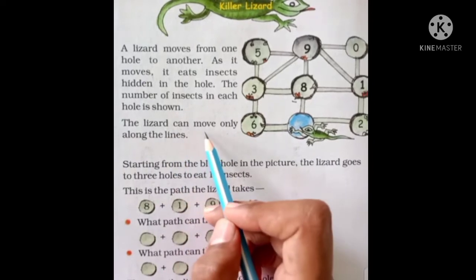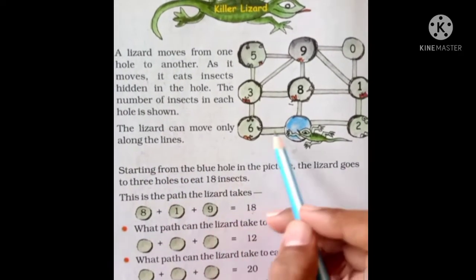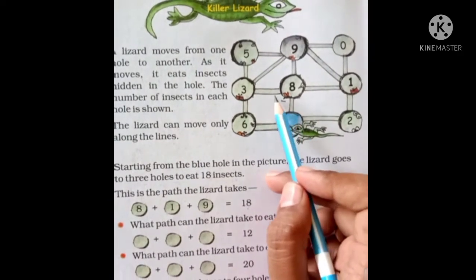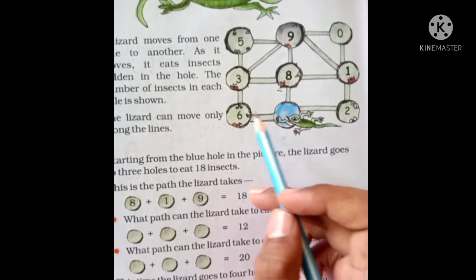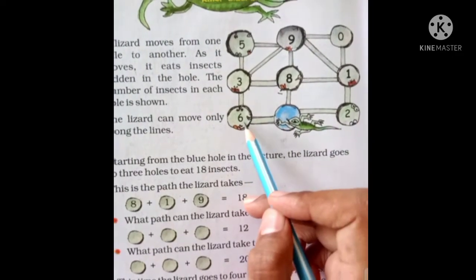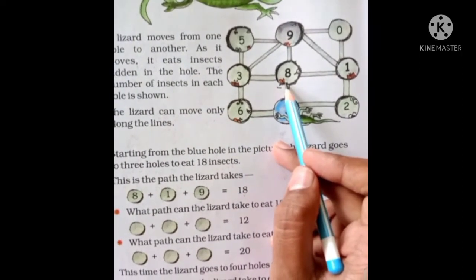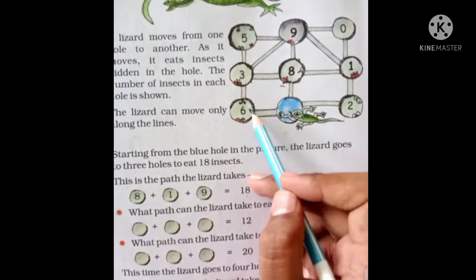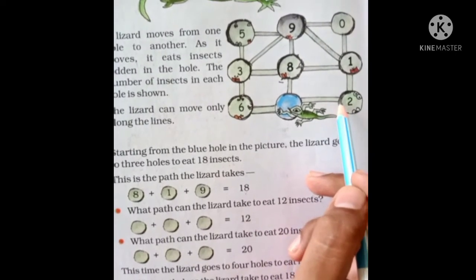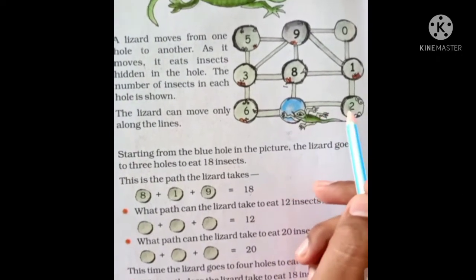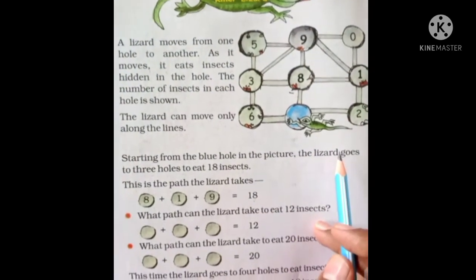The lizard can move only along the lines. If you start here, it will move along the lines — 3 and 8. But it cannot move from 6 to 8 because there is no line. Same here: if there is no line from 8 to 2, then it will not move. It can only move according to the lines.